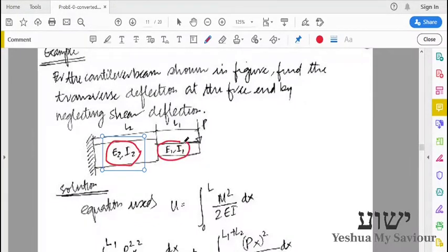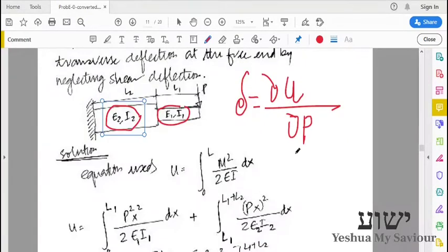We have to find the deflection, so the best method is to use the strain energy. We have to find the strain energy.